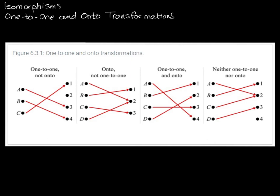One-to-one is not new vocabulary, but onto is. We're not just interested in working with functions — functions are a special case of transformations. Functions take elements from a domain and map them to a range, always involving real numbers. But with transformations, our domain could be polynomials and our range could be two-by-two matrices, for example. So we need to translate what we've learned about one-to-one and onto to work with all possible transformations.